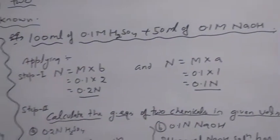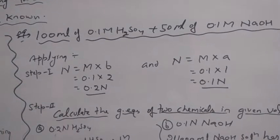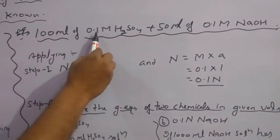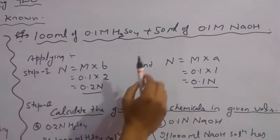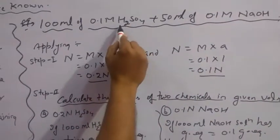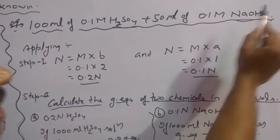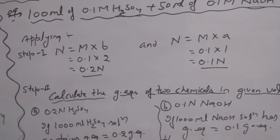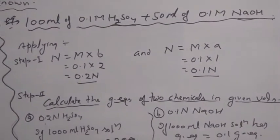This is your numerical. Suppose you are provided with two solutions: 100 ml of 0.1 molar H₂SO₄ and 50 ml of 0.1 molar NaOH. H₂SO₄ is an acid and NaOH is a base. So after mixing these two solutions, the total volume of solution will become 150 ml.